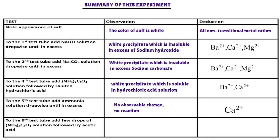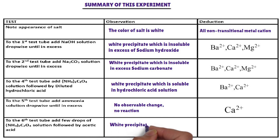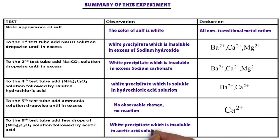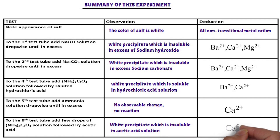Confirmatory test. In the fifth test tube, ammonium oxalate solution followed by acetic acid is added. The cation from the above list that forms a white precipitate with ammonium oxalate solution, and the precipitate is insoluble in acetic acid, is calcium ion. Calcium ion is confirmed. The cation present in the salt is calcium ion.